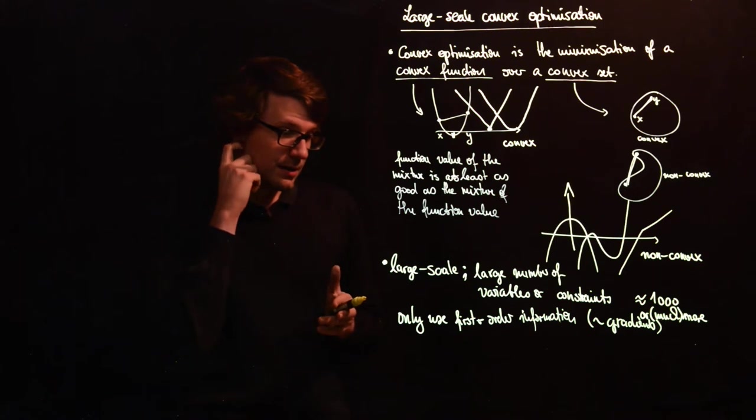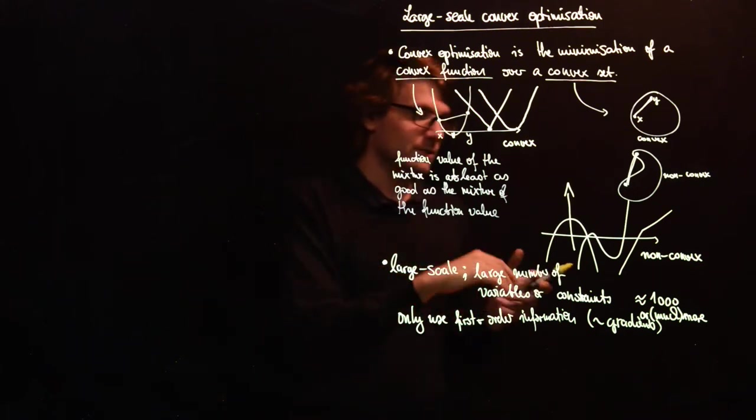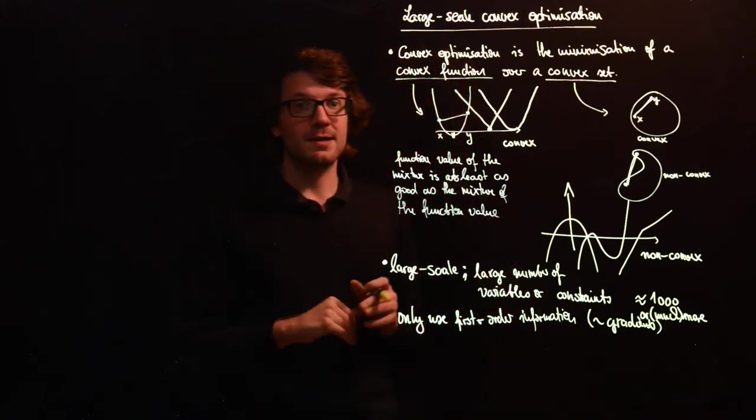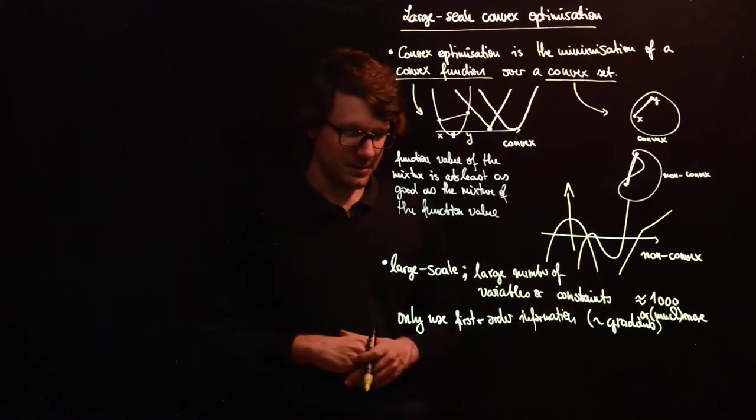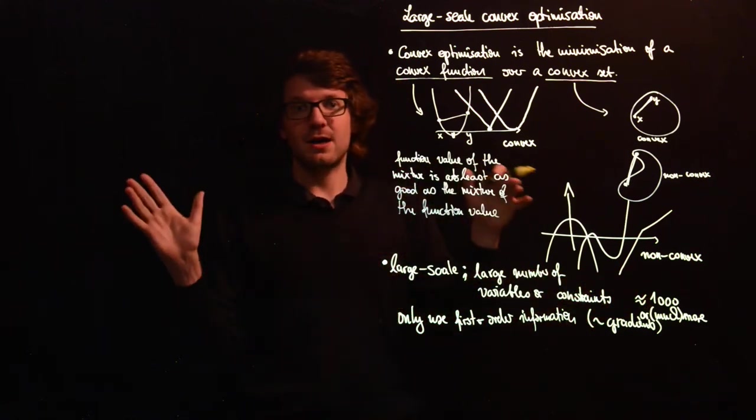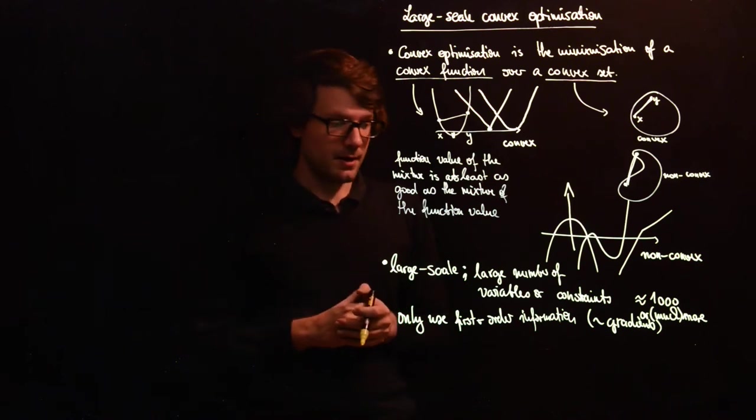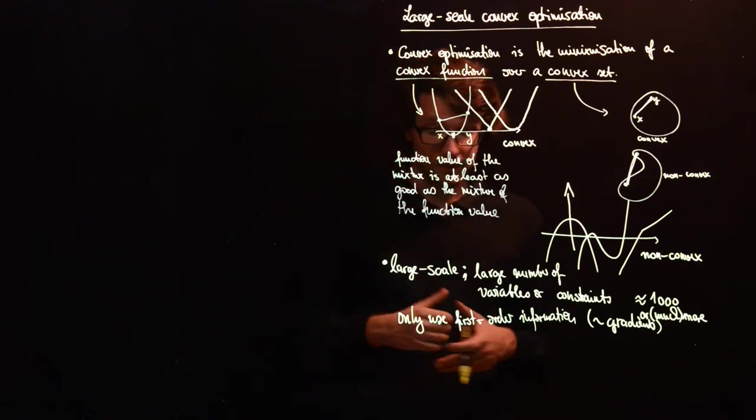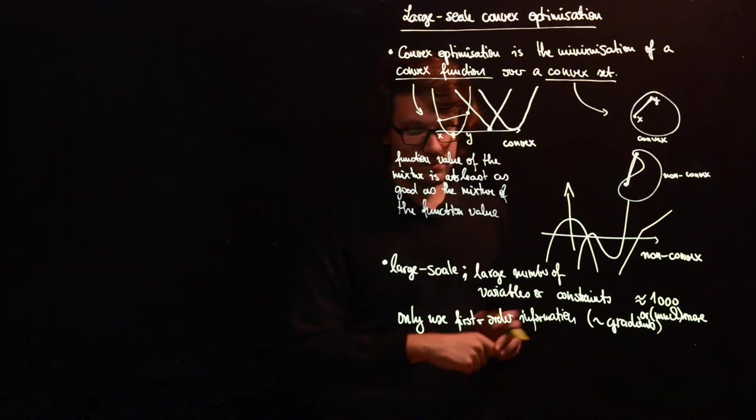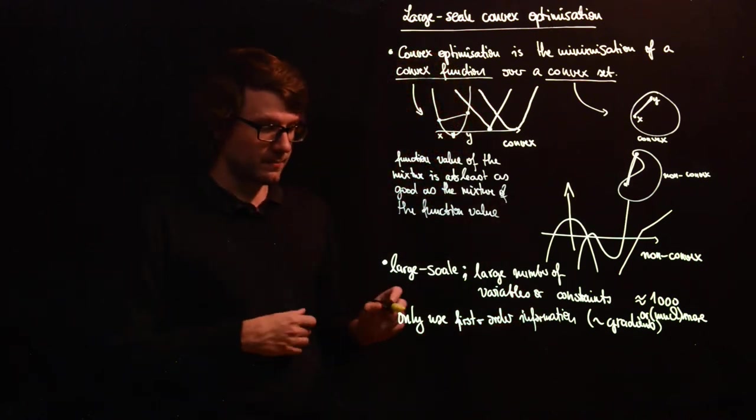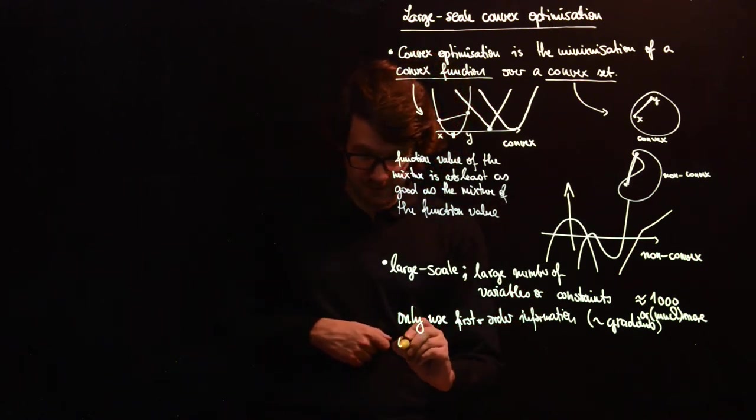If you have a large number of variables, a thousand is probably still fine for that, but if it comes to really large numbers like millions of variables, then you can't just take this huge matrix. You can't even put it in memory, and this is a problem. So in our course we use only first order information.